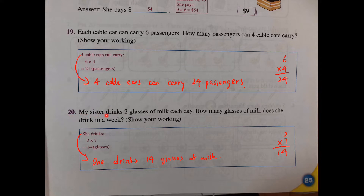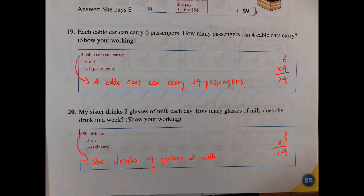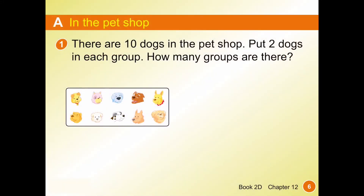Question 20: my sister drinks 2 glasses of milk each day. How many glasses does she drink in a week? There are 7 days in a week, so 2 times 7: 2 is the number of items within a group and we have 7 groups. 2 times 7 equals 14 — she drinks 14 glasses of milk in a week. This is the column form. Now please turn to book 2D, page 17, part 8: In the Pet Shop.